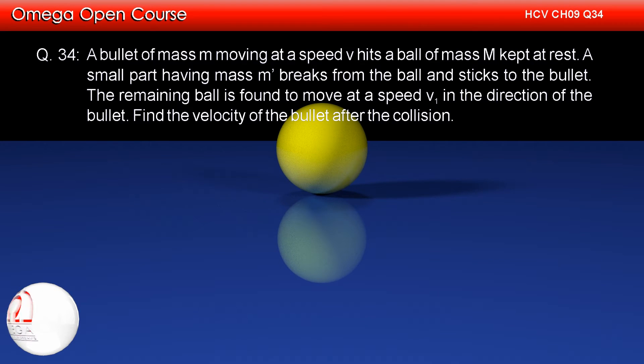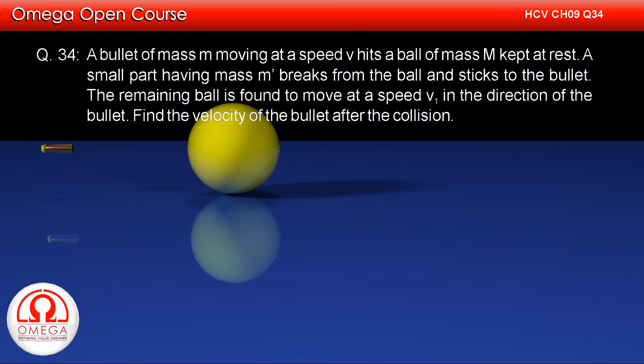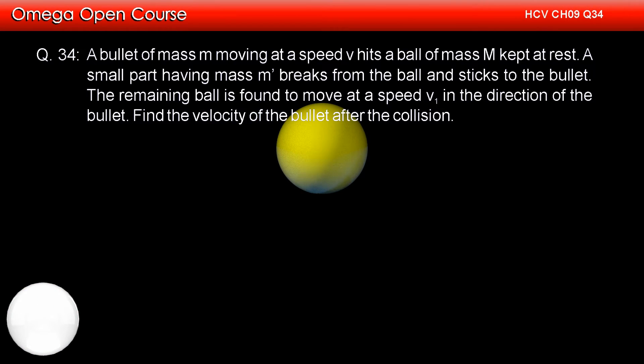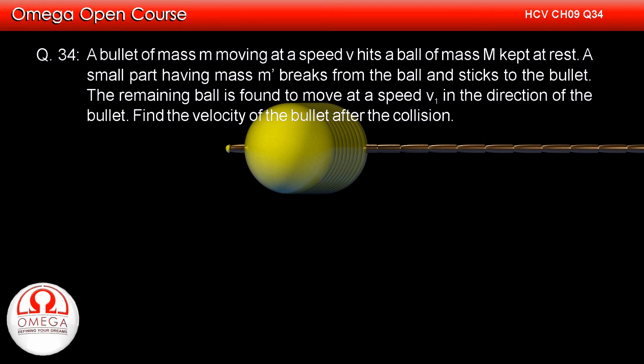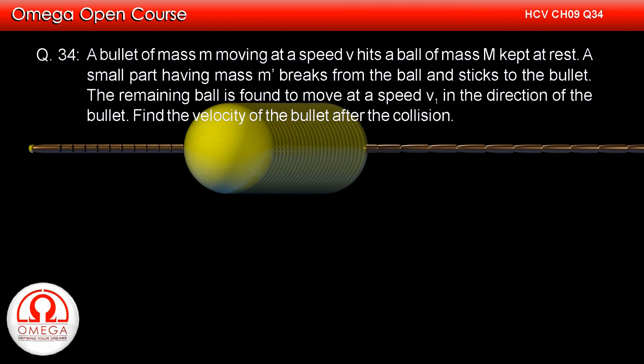A bullet of mass M moving at a speed V hits a ball of mass capital M kept at rest. A small part having mass M' breaks from the ball and sticks to the bullet. The remaining ball is found to move at speed V1 in the direction of the bullet. Find the velocity of the bullet after the collision.